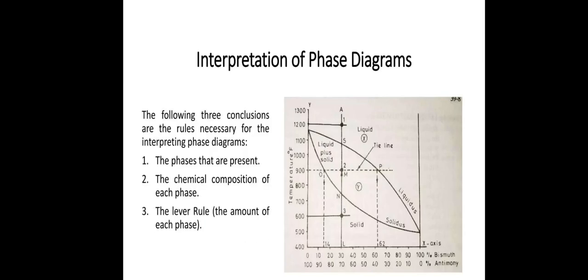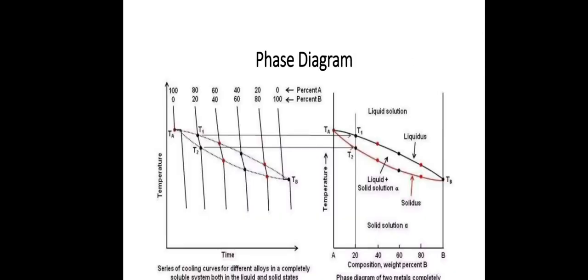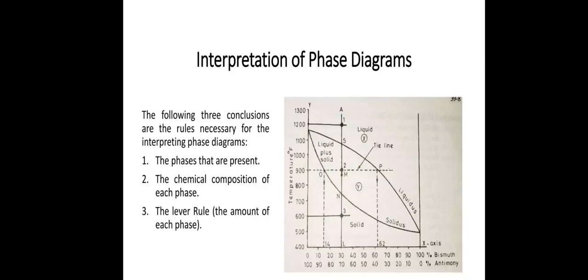Interpretation of phase diagram. Here the following three conclusions are the rules necessary for interpreting phase diagrams: the phases that are present, the chemical composition of each phase, the lever rule for the amount of each phase.